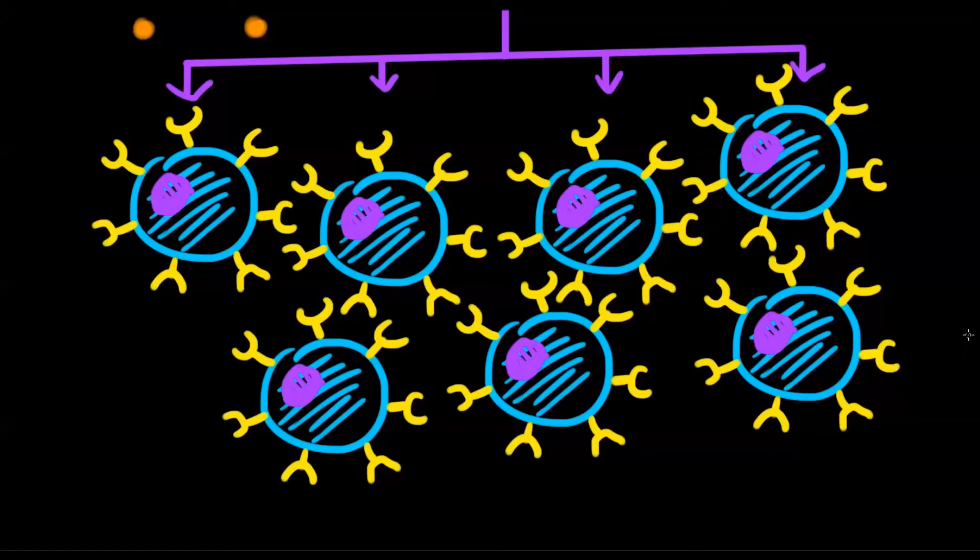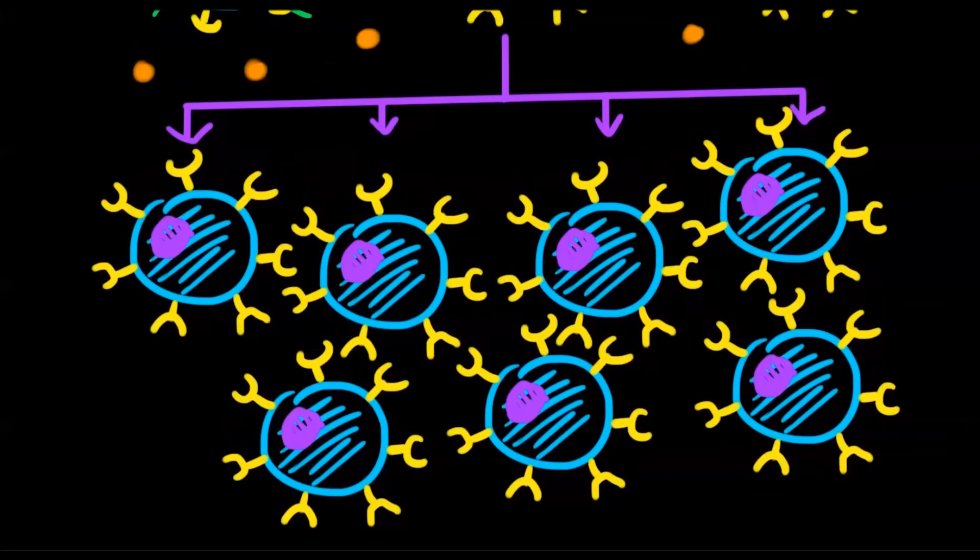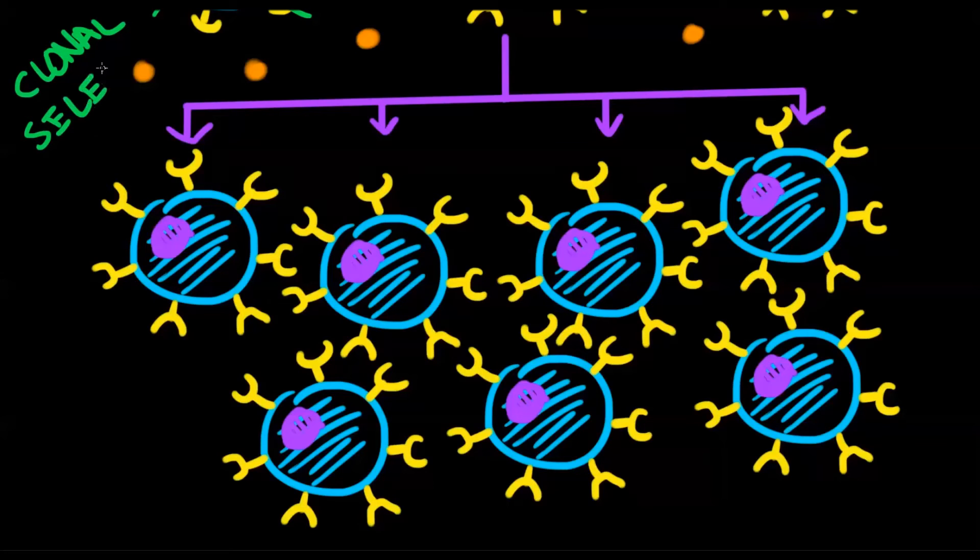We call this process of activating only those immune cells with the right receptors clonal selection, because only the immune cells that can detect and fight the infection are selected. These are the only ones that can fight the pathogen, so they're the only ones called up to do the job. And we call their reproduction clonal expansion, because this group of specialists expands greatly in number.